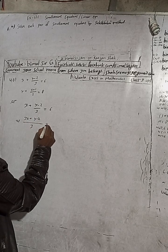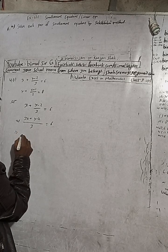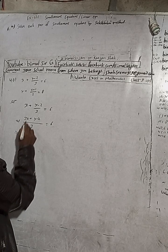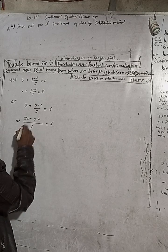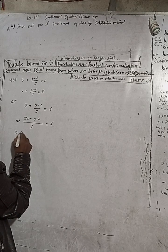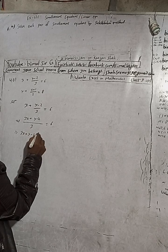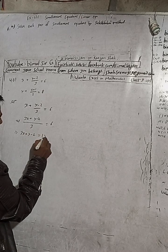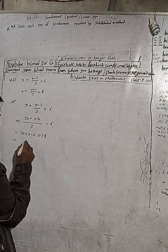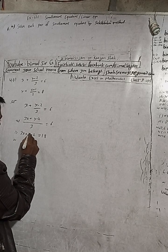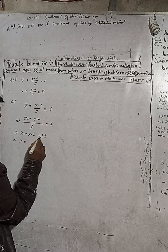And this equals 6 multiplied by 3, which is 18. So we now have 3x plus y minus 2 equals 18. From here we can isolate y: y is equal to 20 minus 3x.